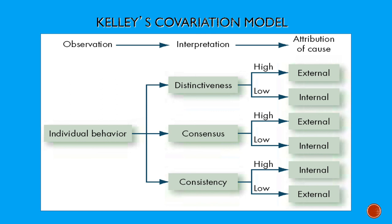There have been hundreds of studies testing these attribution models, and I wouldn't be telling you about them if the research didn't show they work pretty well. In the case of Kelley's covariation model, when people are presented with information about distinctiveness, consensus, and consistency of behaviors, they do make judgments exactly the way Kelley suggested. In Jones and Davis's theory of correspondent inferences, people do weight non-normative behavior more heavily and make more strongly correspondent attributions when that kind of behavior is available. The predictions of these models have held up well and inspired many variations throughout the decades since.